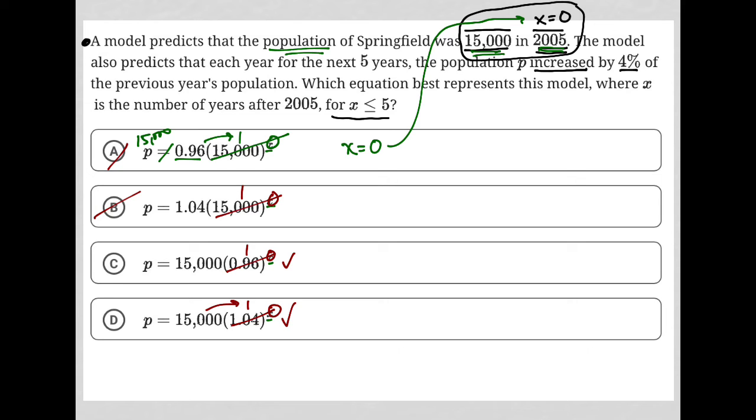So both choices C and D work. What's left that I need to pay attention to determine the correct answer? Well, it's really this 0.96 versus 1.04. That's where the second bit of information, the 4% increase, comes in.